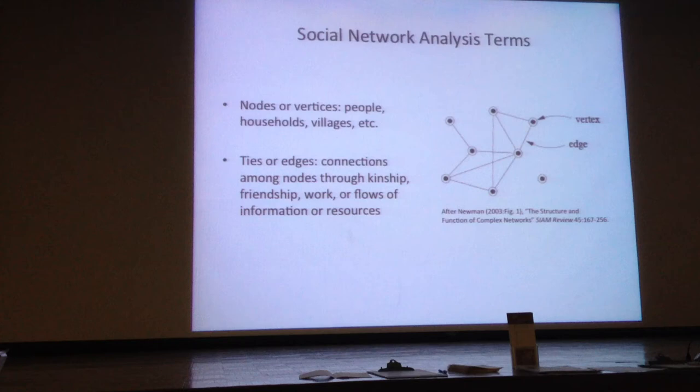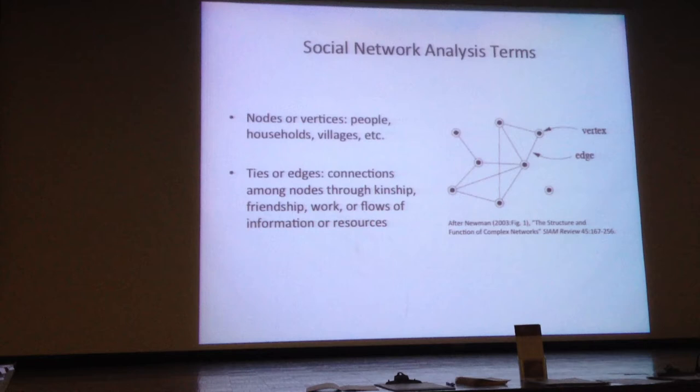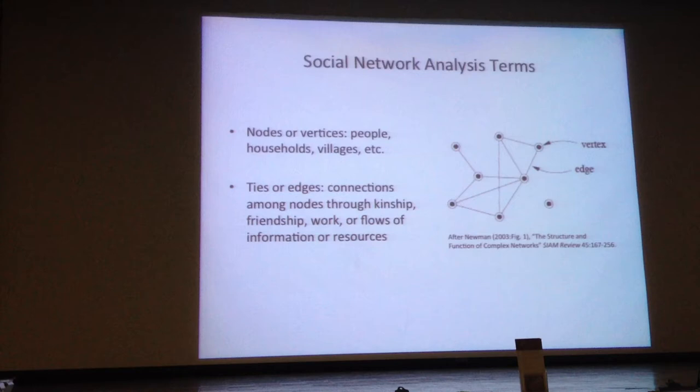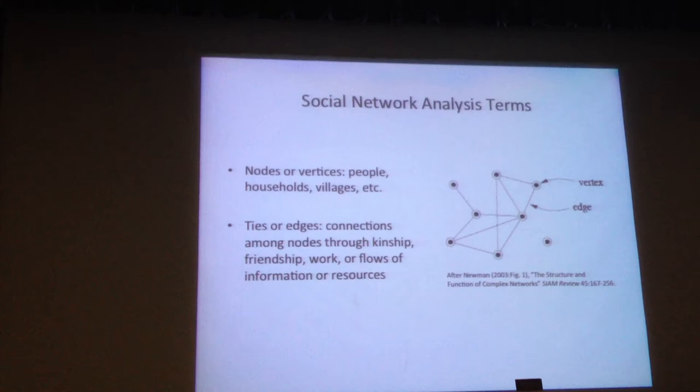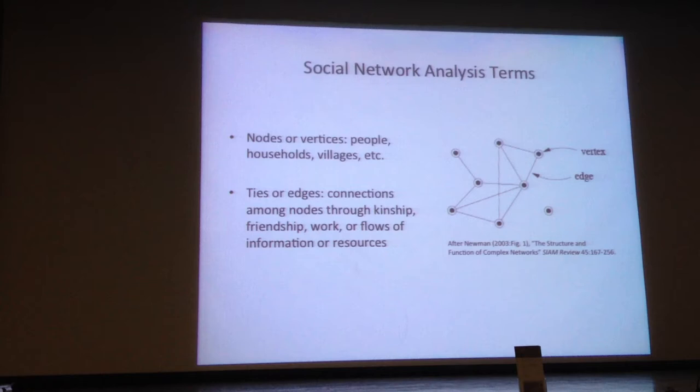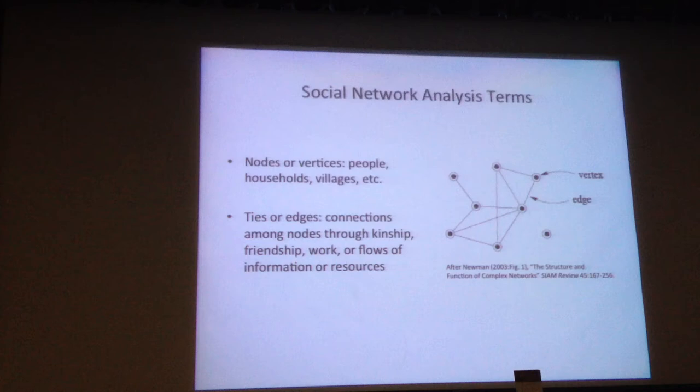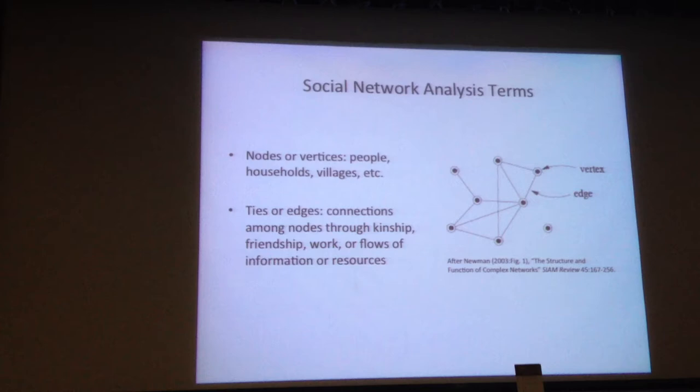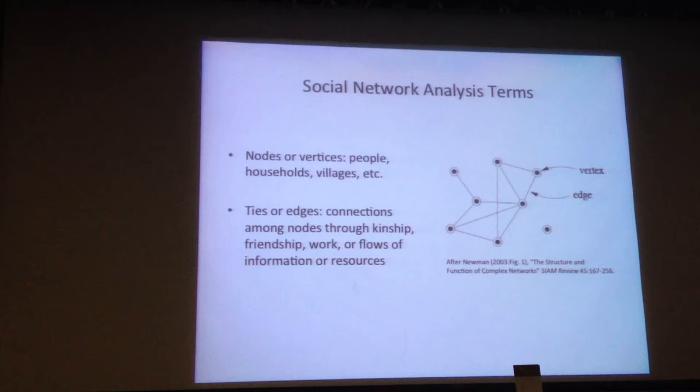In social network analysis, we refer to the subject matter as nodes or vertices. This can be people, households, or villages — in the case of our project, we're looking at settlements or villages. The connections between them are referred to as ties or edges. These connections can be kinship, friendship, or work, but they can also be flows of information or resources.